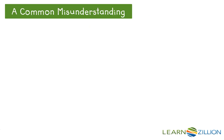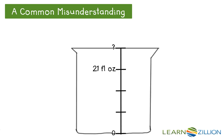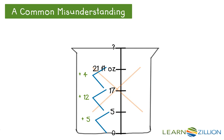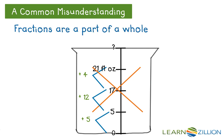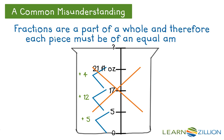Before I go on, I want to clear up a common misunderstanding. Some students might think it doesn't matter what numbers are written next to each mark on the scale, and therefore think there could be a lot of answers because they can just figure out any numbers that add up to 21. So they might think 0 plus 5 gets to 5, and 5 plus 12 gets to 17, and then 17 plus 4 equals 21 — so that should work. If a student did this, it would be very wrong. Because fractions are a part of a whole and are therefore equal pieces of that whole, we must skip count by the same number each time we move up our scale.